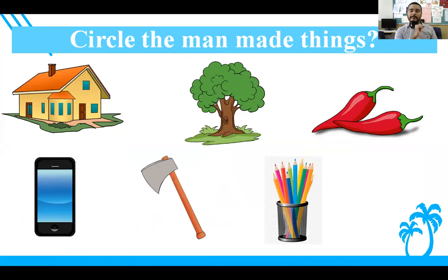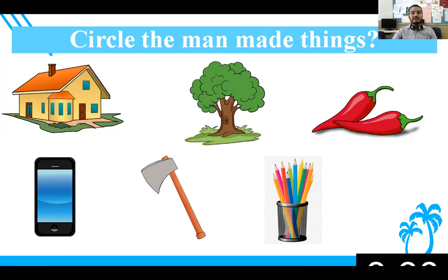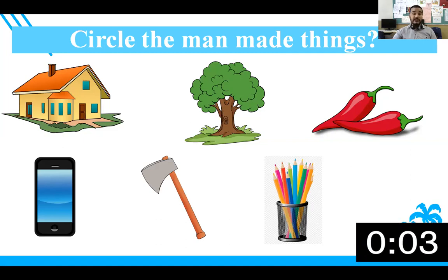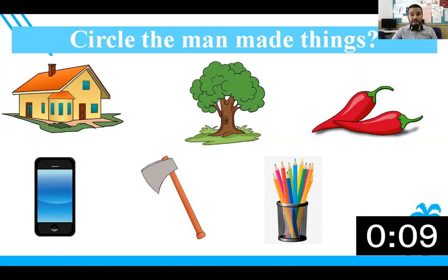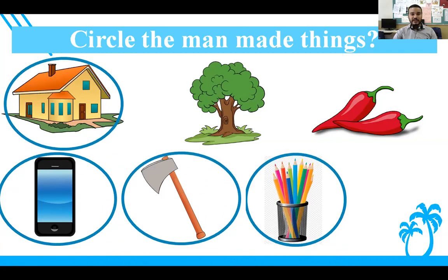So as we have seen natural things and manmade things — here is activity time! You can see six pictures. You have to find and circle the manmade things only. You will get time of 10 seconds. Your time starts now — think of all these pictures and decide which is manmade and which is not. There you go — those circled things are manmade things, and the others are natural things. Got it?